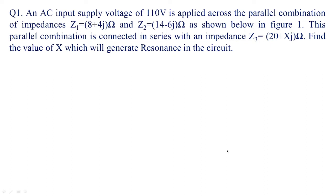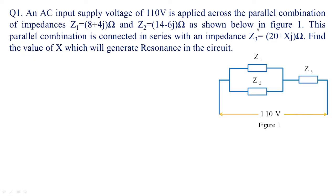The first numerical: an AC input voltage of 110 volts is applied across a parallel combination of impedances Z1 and Z2 as shown in figure 1. This combination is connected in series with another impedance Z3 of 20 plus xj ohms. We need to find out the value of x under resonance.